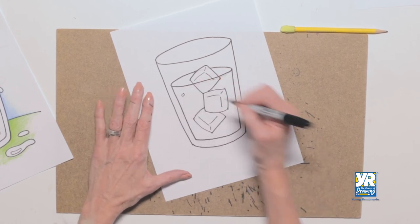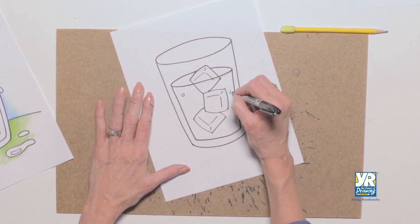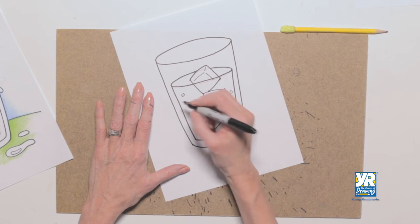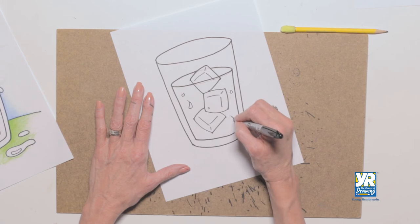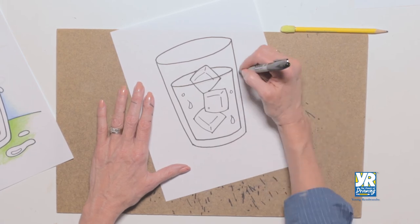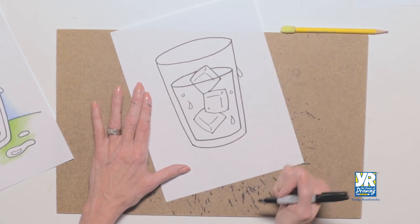Now I'm gonna put a few little texture lines. I got a couple of bubbles in here. I'm going to put like a little sweat mark like it's on the outside of the glass but it looks like it's inside the glass. A little sweat mark. Even a little sweat mark on the outside. It's dripping down.